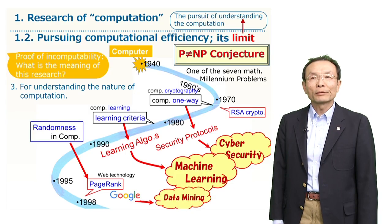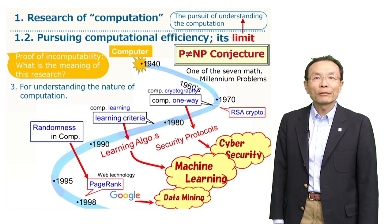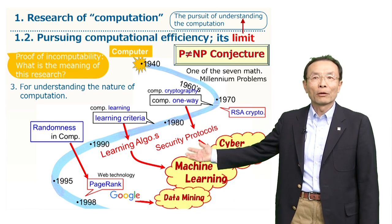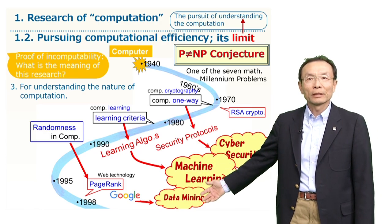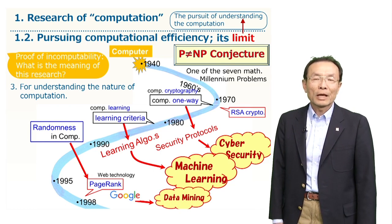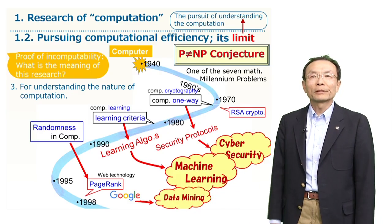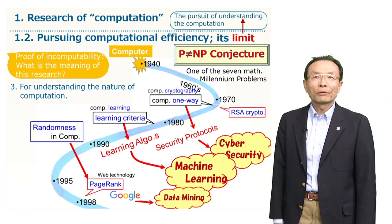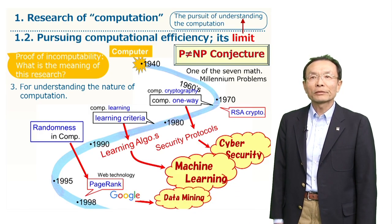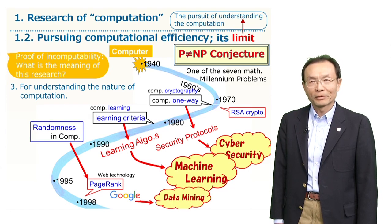In summary, our desire for resolving the P-not-equal NP conjecture has been a driving force for the development of the current ICT society. Note that the conjecture is still open, and actually, we don't have any clue for resolving this conjecture. In other words, there are still many mysterious things about the nature of computation. So, if you like, please jump into this attractive field.